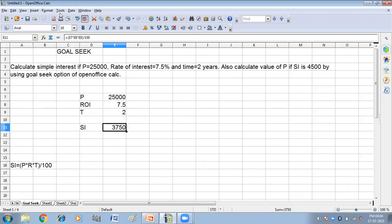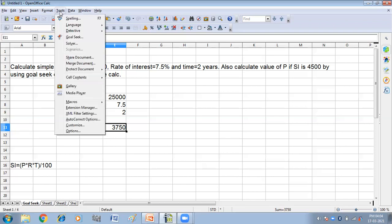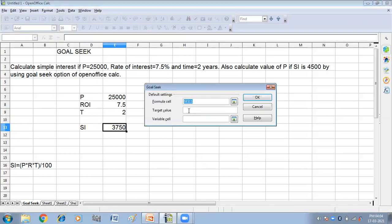So let us do it. Click on the Tools and then Goal Seek. This is my target cell, formula cell. Target value is 4500. I want to get 4500 simple interest rate, and by changing which cell? By changing the principal.